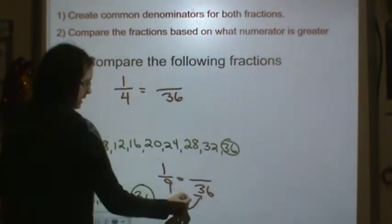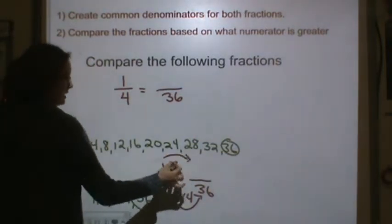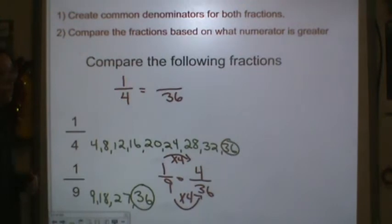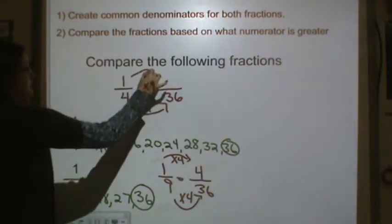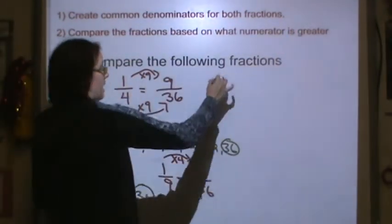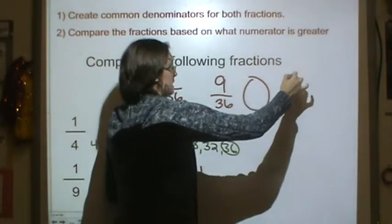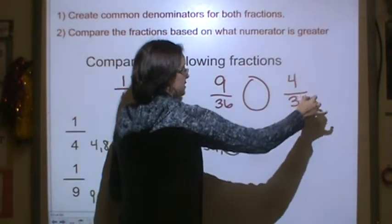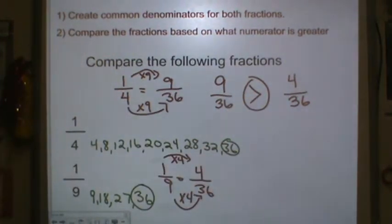I multiply 9 times 4 to get 36, so if I multiply the denominator times 4, I need to multiply the numerator times 4, so I have 4/36. 4 times 9 is 36, so 1 times 9 is 9. Now I can compare these because my unit size, or my denominator, is the same. So I can see that 9/36 is greater than 4/36.